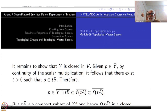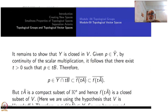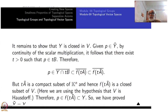But f(tĀ) is compact: Ā is a bounded subset of K^n contained inside the unit disk, so its closure is compact. t·Ā is also compact, since t is a scalar. Therefore f(tĀ) is a closed subset of V, because it is compact and V is Hausdorff. This is the first time we are using that V is Hausdorff: compact subsets are closed.